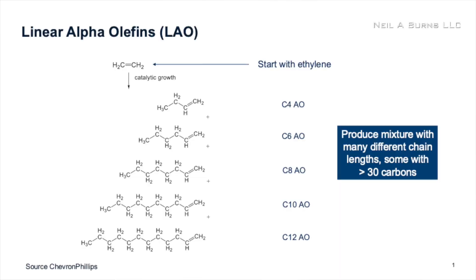Alpha olefins themselves are typically made by ethylene addition — you're oligomerizing ethylene into long chains. A typical plant will produce a distribution of products from C4 all the way up to C30.